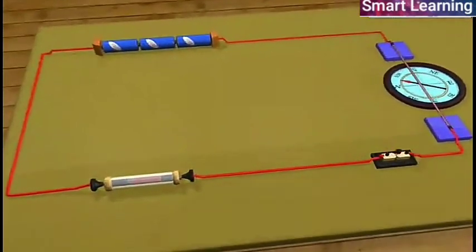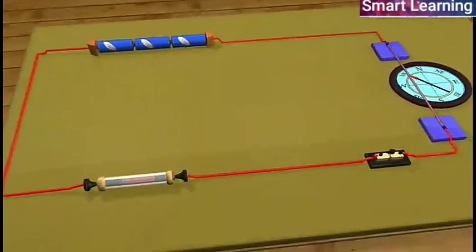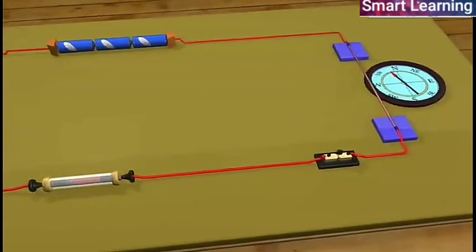But as we move the compass needle away from the conductor, the magnitude of the magnetic field decreases.